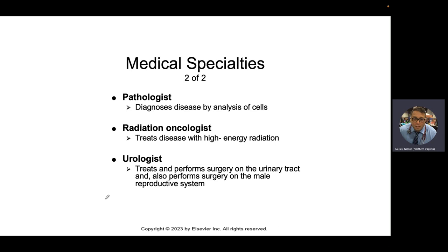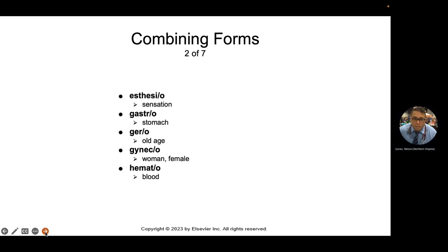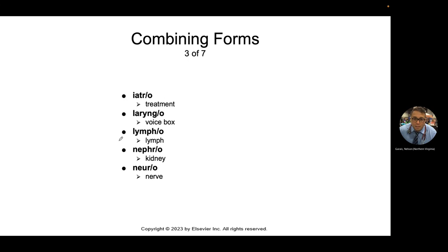Urology covers the urinary tract and is very good with the male reproductive system. The urogynecologist can now see both male and female. Hematology deals with blood and blood banking. Iatrogenic — 'iatro' means pertaining to the treatment itself. Could the treatment give you side effects or make you sicker? Yes — the classic example is chemotherapy. In order to kill the tumor, the medication does a number on you physically, and those signs and symptoms are called iatrogenic.